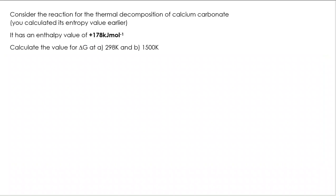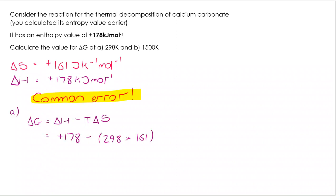So let's have a think about this calculation. Thermal decomposition of calcium carbonate. You calculated its entropy value earlier. It came out as plus 161 joules per Kelvin per mole. Have a go at calculating delta G at 298 K. Well, my delta H is plus 178. I'm going to show you now a really common error. See if you made this. Delta G is delta H take T delta S. So my delta H is 178, I'm taking away my temperature 298 multiplied by my delta S 161, which gives me a delta G value of negative 47,800. If you've done that, don't cross it all out and pretend it didn't happen. Highlight it to remind yourself not to make that mistake again.